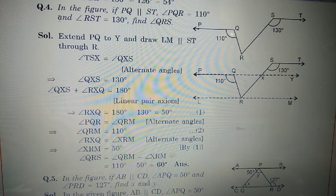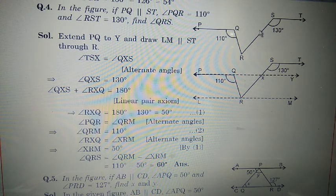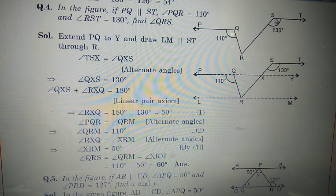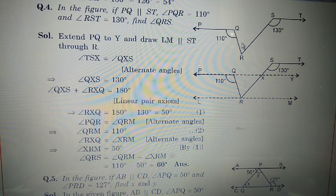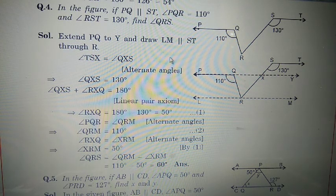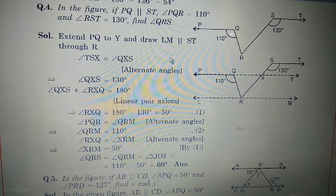Chapter 6, Exercise 6.2, Sum number 4. In the figure, PQ is parallel to ST. Angle PQR is 110 degrees and angle RST is 130 degrees — these are given. We have to find angle QRS. First draw the figure, write given, then to prove. Now extend PQ.